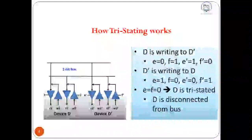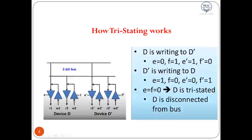In this diagram, what do you think will happen if we set both F and F' these enable lines to be 1?